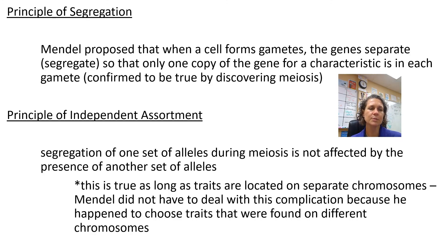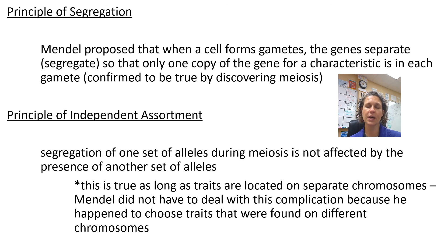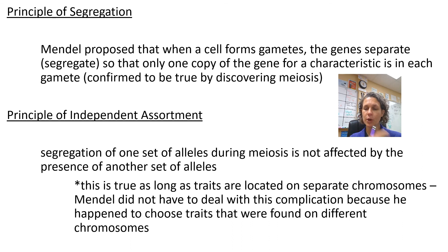The principle of segregation states that when a cell forms gametes — either eggs or sperm — the genes separate or segregate so that only one copy of the gene for each individual characteristic is put into that gamete. We know this is true because we know about meiosis. Basically, in each gamete there is only one letter — one gene for every characteristic. Both T's don't go to the same gamete when they are split.